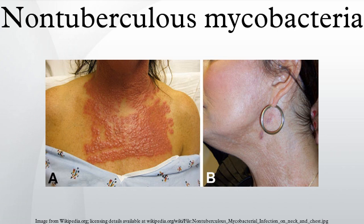Pathogenesis: The most common clinical manifestation of NTM disease is lung disease, but lymphatic, skin and soft tissue, and disseminated disease are also important. Pulmonary disease caused by NTM is most often seen in post-menopausal women. It is not uncommon for cystic fibrosis, alpha-1-antitrypsin deficiency, Marfan's syndrome, and primary ciliary dyskinesia patients to have pulmonary NTM colonization and/or infection.